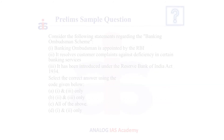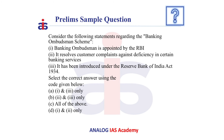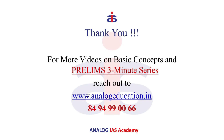Now let us see a question based on this. Consider the following statements regarding the Banking Ombudsman Scheme: Statement 1 — Banking Ombudsman is appointed by the RBI. This is true. Statement 2 — It resolves customer complaints against deficiency in certain banking services. This is also true. Statement 3 — It has been introduced under the RBI Act, 1934. This statement is false, because this scheme is introduced under Section 35A of the Banking Regulation Act. So the answer is 1 and 2 only.